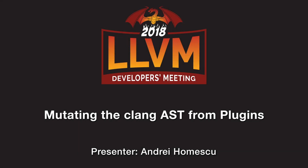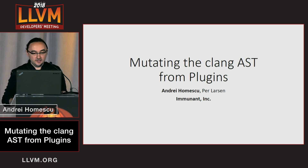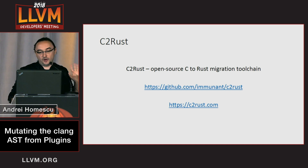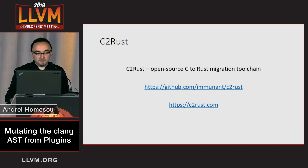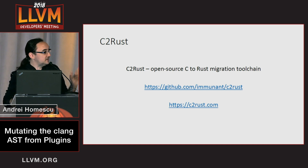Hi everyone, I'm Andrei from Immunet and I'm going to talk about our experiments on playing with the Clang AST from a plugin. But first I will talk a little bit about the background project that caused these experiments, which is our C2Rust project, an open source automated transpiler, which we put up on GitHub.